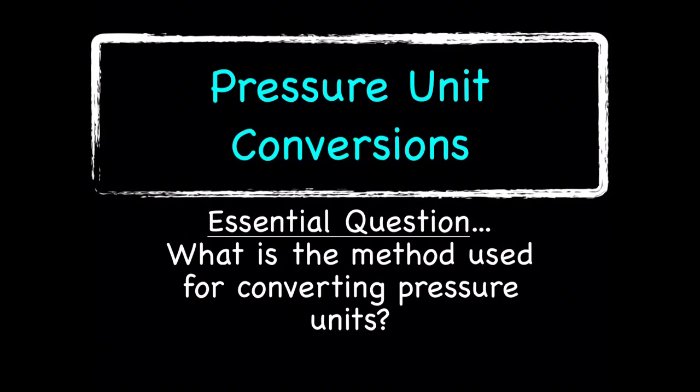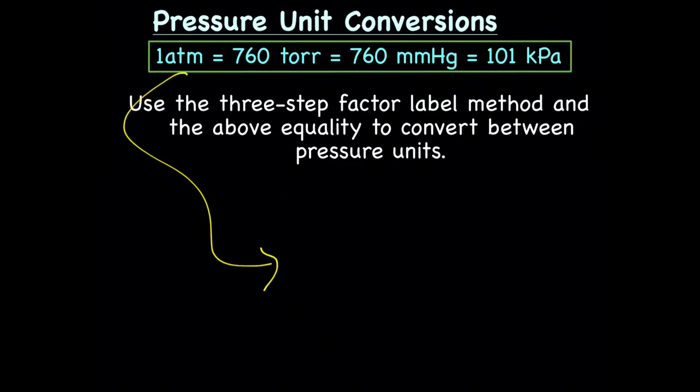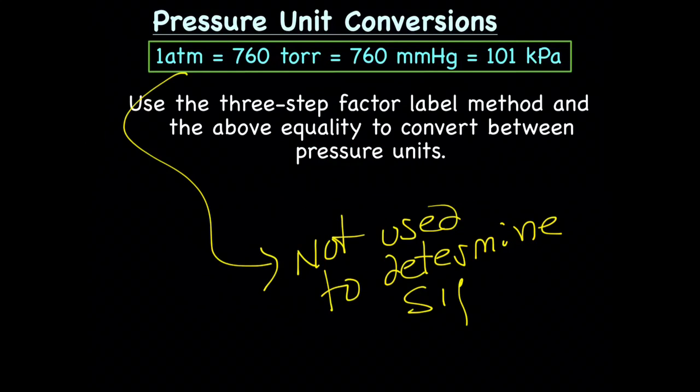Today you should have available your calculator and your unit conversion table. For pressure unit conversions, you should have this equality on your unit conversion table: 1 atm equals 760 Torr equals 760 millimeters mercury equals 101 kPa. And because these are constants that we didn't measure, these are not used to determine sig figs.